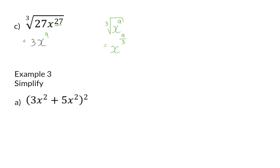In example 3 we are going to look at what happens if there is more than one term. In A we have a bracket with two terms inside that need to be squared. The two terms are like terms because they have the same variables, and therefore they can be added up. When we add them up we get 8x squared, and when squared this gives a final answer of 64x to the power of 4.